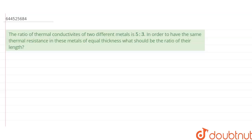The ratio of thermal conductivities of two different metals is 5:3. In order to have the same thermal resistance in these metals of equal thickness, what should be the ratio of their length?